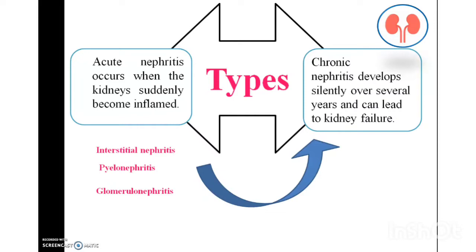Interstitial nephritis is when the space between the kidney tubules becomes inflamed. Pyelonephritis is inflammation of the kidney due to bacterial infections through irritants. Glomerulonephritis is inflammation occurring in the glomeruli.